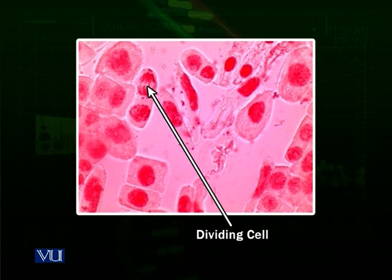This is actually a picture taken through a microscope — not a diagram. These are onion epidermal cells. You can see when you cut an onion, there is a small membrane, and these are the cells of that membrane which are dividing.